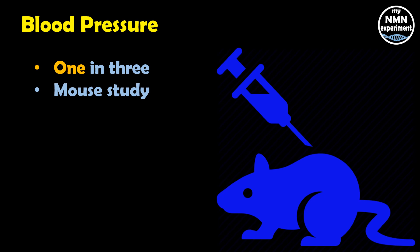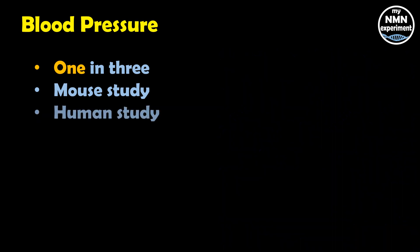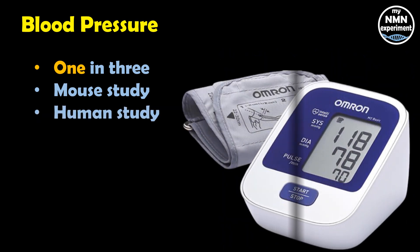A review of nine human studies in 580 people found that taking more than 500 milligrams of quercetin a day in supplement form reduced systolic and diastolic blood pressures by an average of 5.8 and 2.6 respectively. Again, although these findings are promising, more human studies are needed.